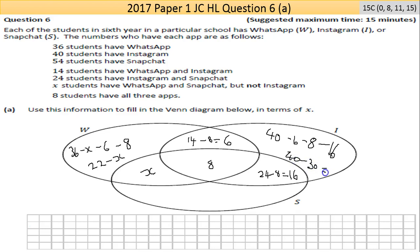Then the last one. The Snapchat is 54 and you're taking away the X here, you're taking away the 8 in the middle and you're taking away the 16 as well. So it should come out to be 30 minus X. Hopefully I haven't messed up the calculations there. I should use the calculator just to double check.